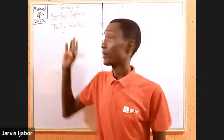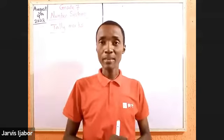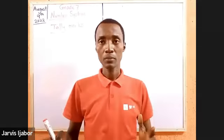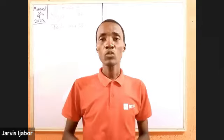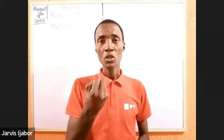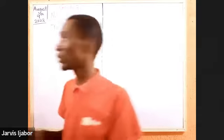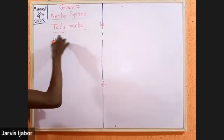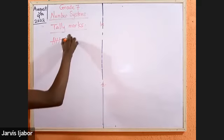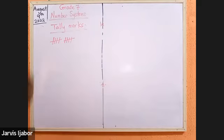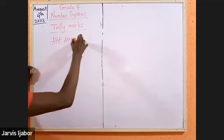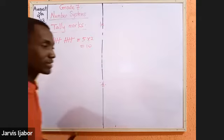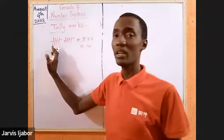The tally mark is a counting system. It works in bundles of fives — once you get to four, five, that's one bundle. So if I count two bundles, that's five times two, which is ten. The tally system is a system that works by counting in fives.